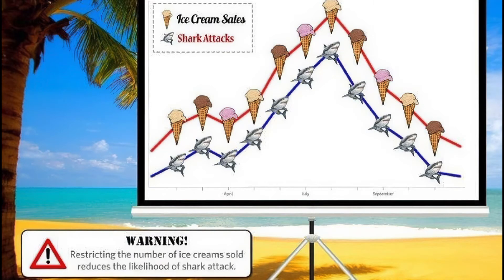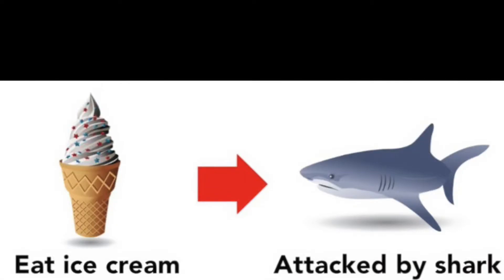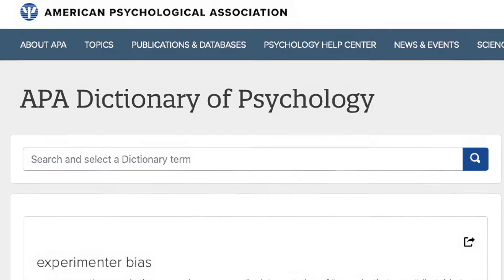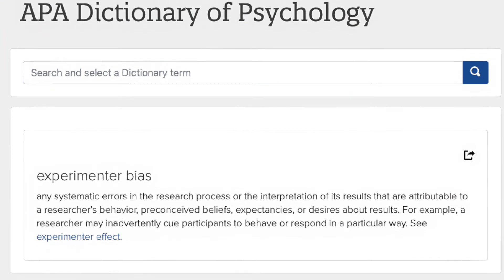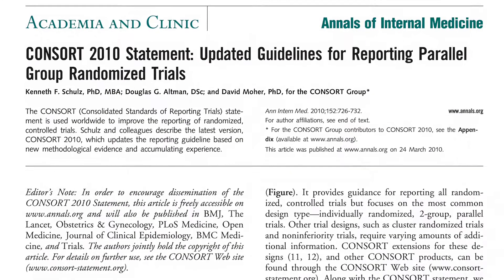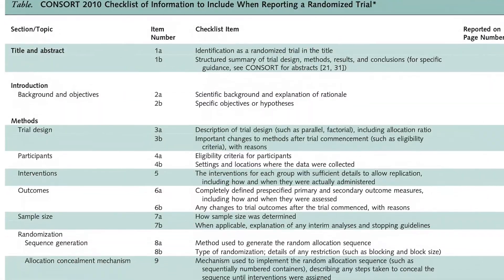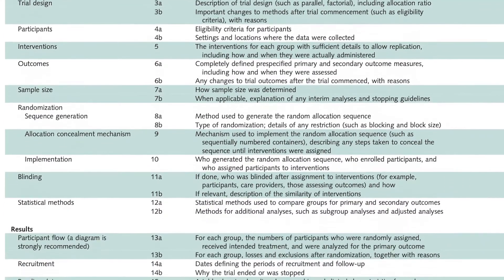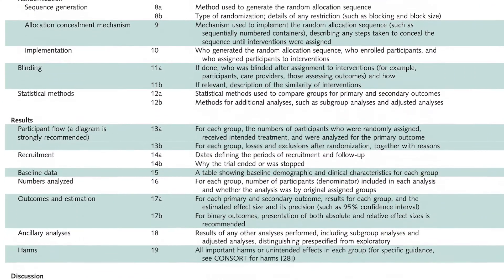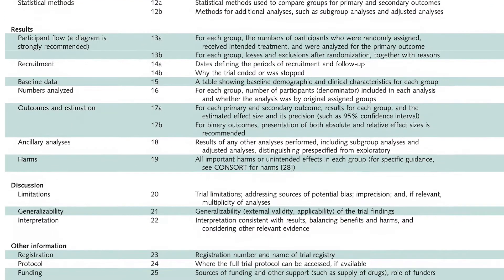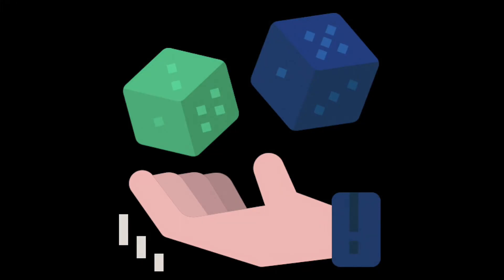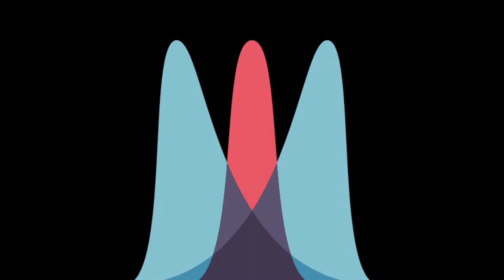The focus of critical appraisal is on both the internal validity and generalizability, or external validity, of the research. Internal validity is a measure of whether the results of clinical research are correct for the patients studied. Threats to internal validity include bias and chance. Bias is any systematic error that can produce a misleading impression of the true effect. Randomized trials are performed with the aim of reducing bias, and well-conducted trials usually have a low risk of bias. Chance is random error inherent in all observations; the probability of chance producing erroneous results can be minimized by studying a large number of patients.